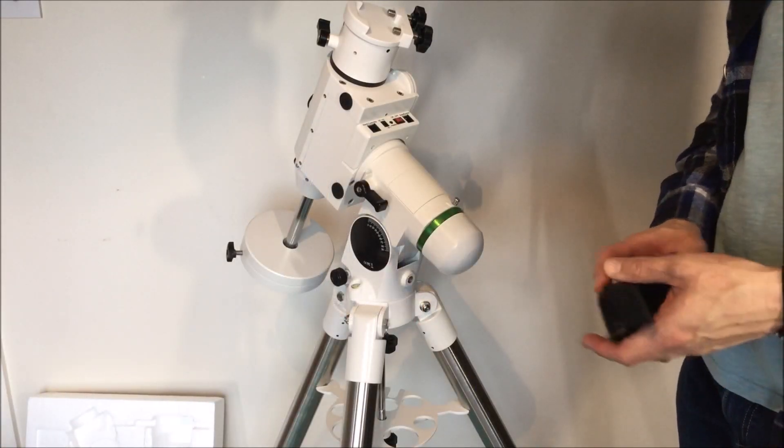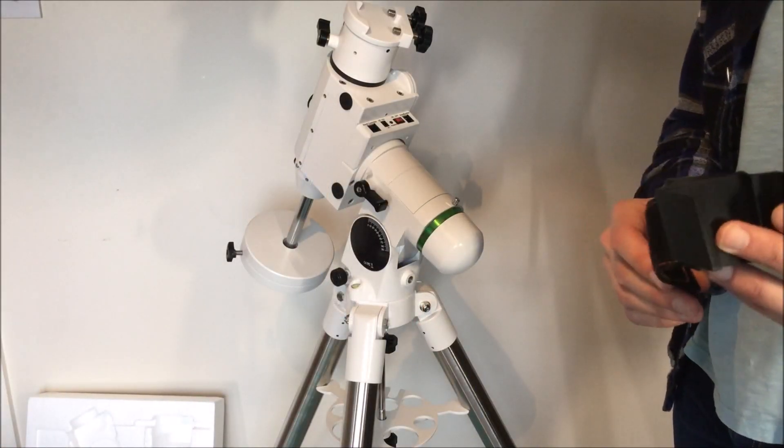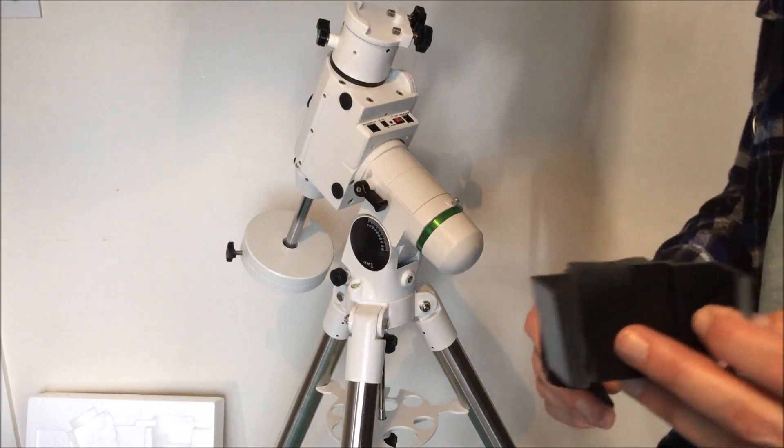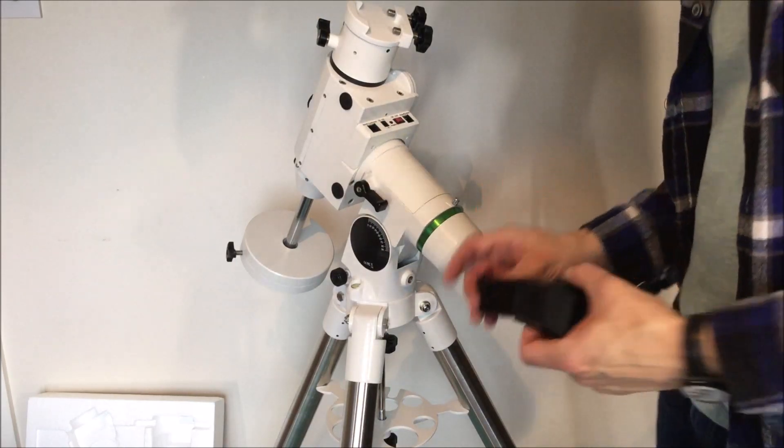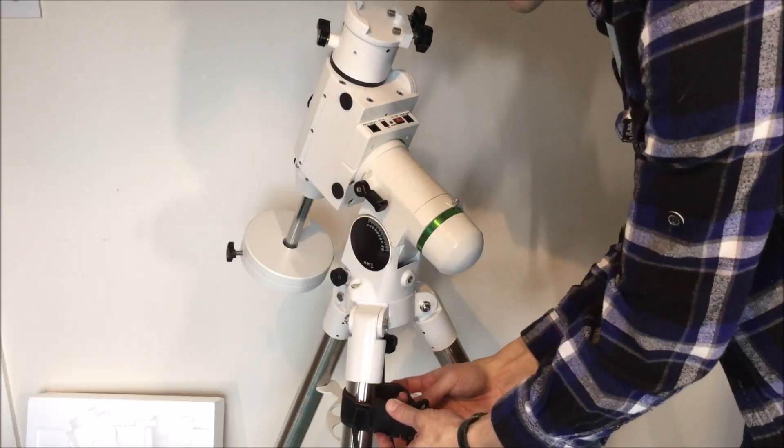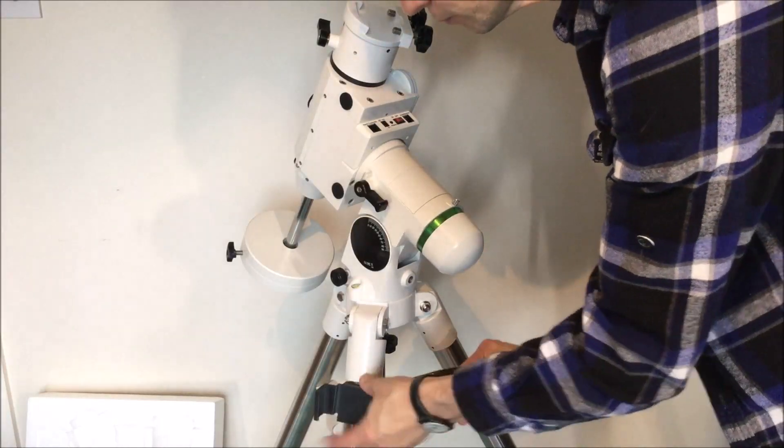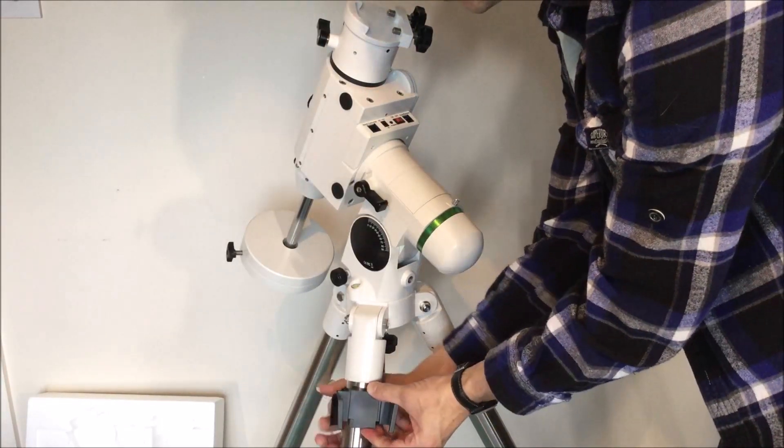So just to finish off the other bits and pieces we've got in the box, we've got a plastic bracket here to hold the hand controller and we can attach that with a velcro strap around one of the legs.